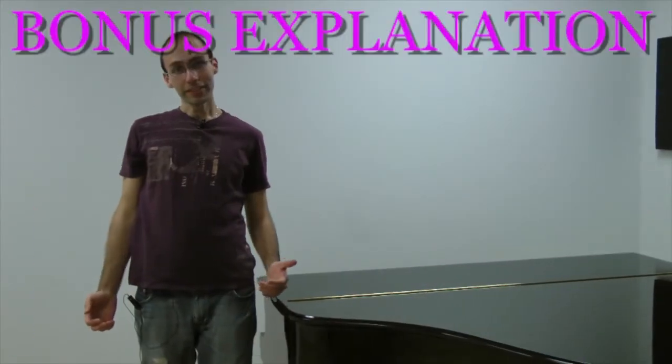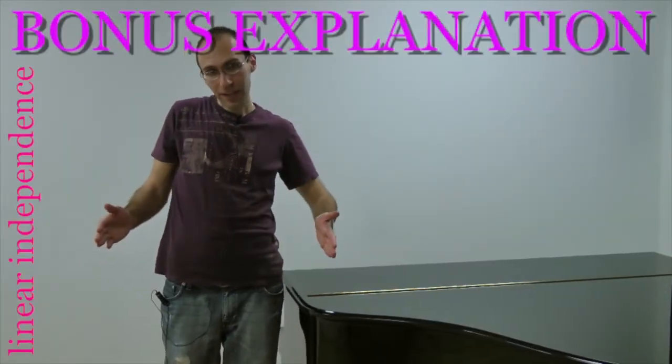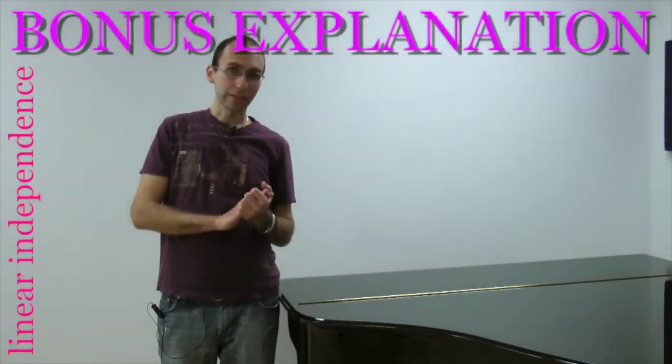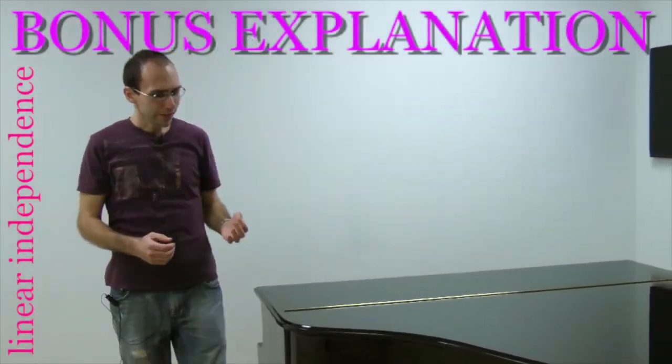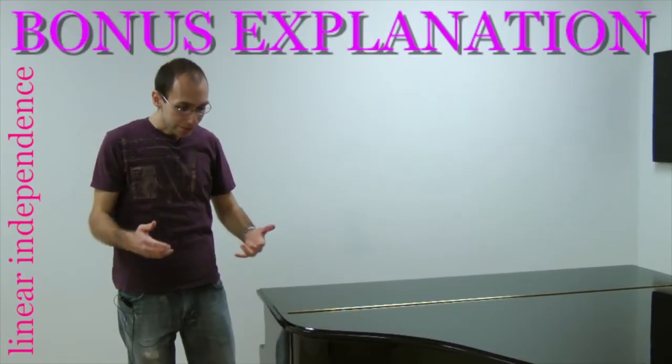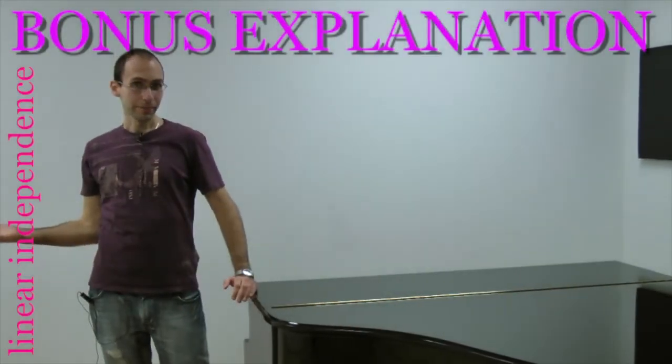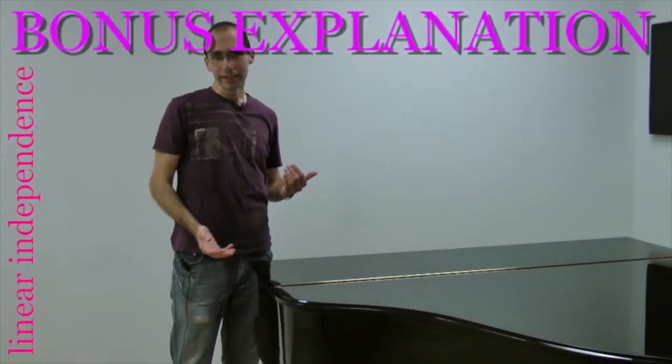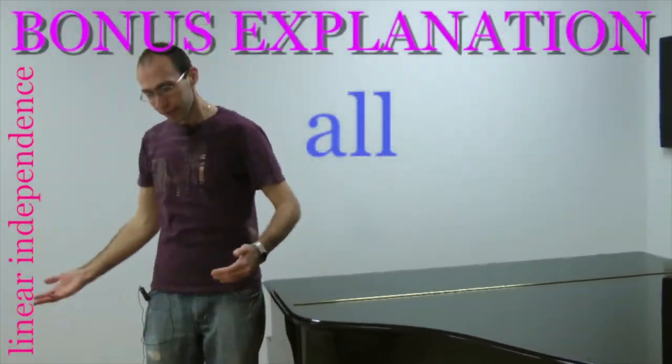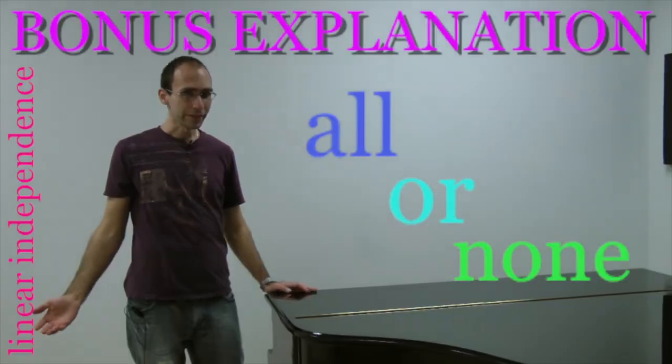The third way to talk about linear independence is to say any vector in the span of my k vectors, x₁ through xₖ, has a unique expression as a linear combination of the x's. We already know that any vector in the span can be written as some linear combination of the x's, but this is saying that it's unique, that for only one particular value of the c's does this expression exist. Notice that this is an all or none kind of property. Either for all vectors in the span there's a unique way to write them as a linear combination, or for none of the vectors in the span is there a unique way to write them as a linear combination.